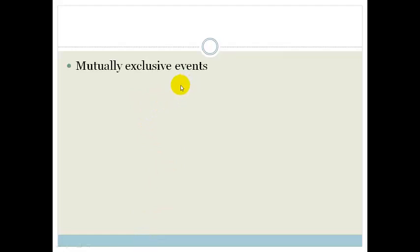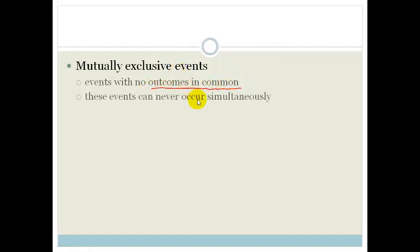Mutually exclusive events. These are events that have no outcomes in common. They have no outcomes in common. So these events can never occur simultaneously. So in real life, an example of a mutually exclusive event is you cannot be at the movies and at the beach at the same time. Okay, so that is not possible. That's a mutually exclusive event.